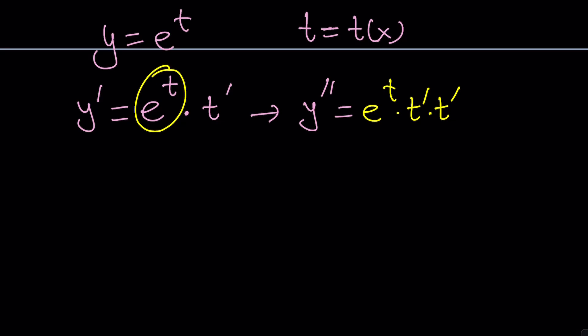The derivative of e to some function is e to the same thing times the derivative of the inside. And I'm going to differentiate this one more time. So this is the product rule, the derivative of e^t, which you already see there, times the second function, which is t'. Again, one more time. So plus the derivative of the second one, which is already a derivative, so second derivative multiplied by the first function.